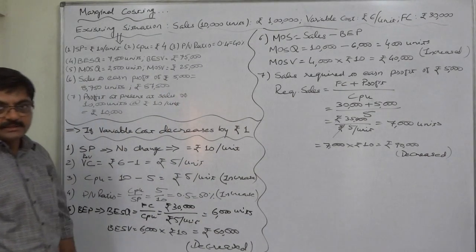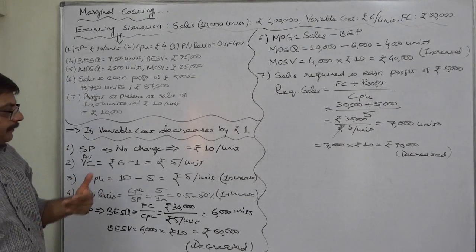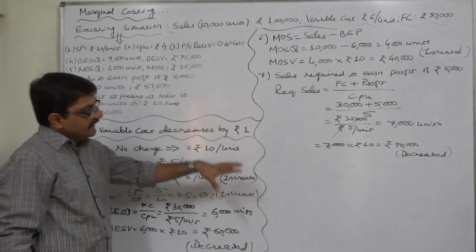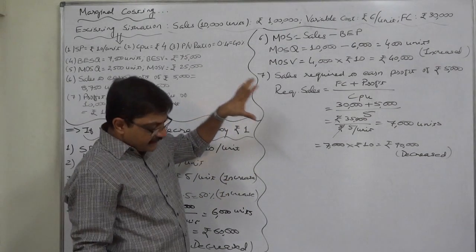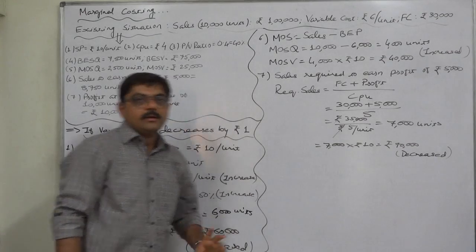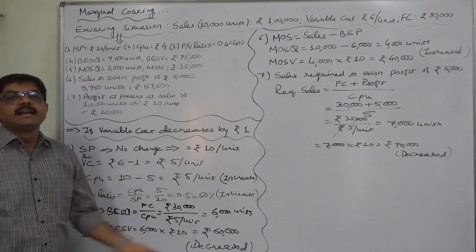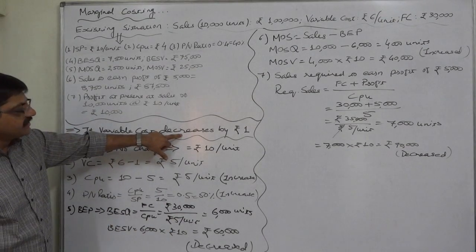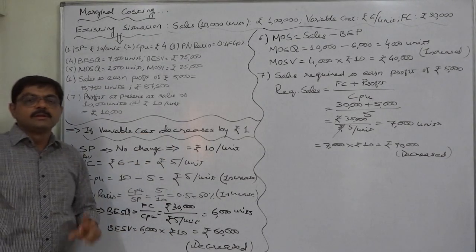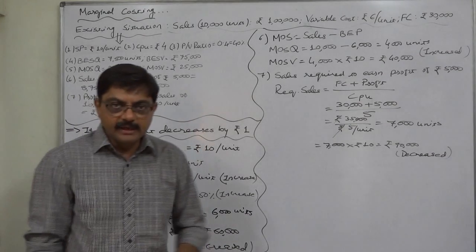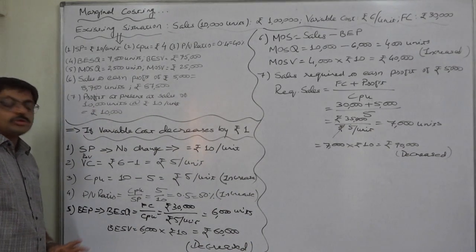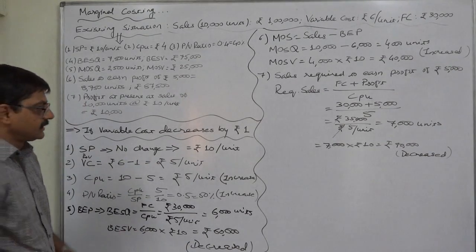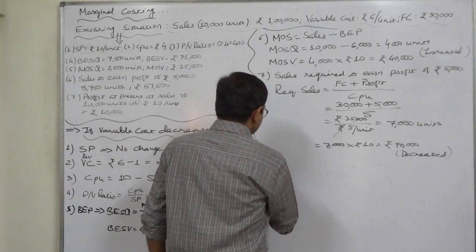Both the sales required to reach break-even and the sales required to earn a profit of rupees 5,000 have decreased. We are writing comments on each individual item, but this can be taken as a principle — every time this type of situation occurs, the effect will be the same. We are actually proving the principles through our numerical examples; these are the proofs.